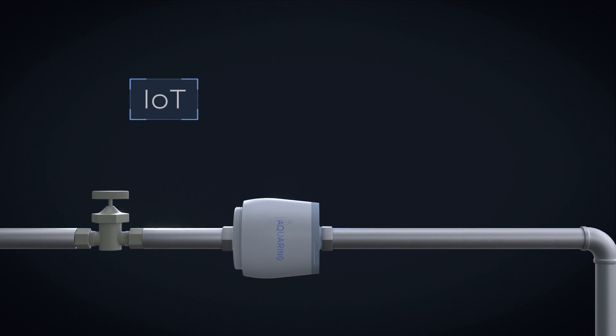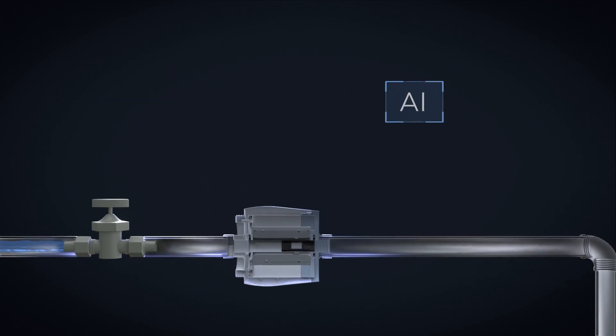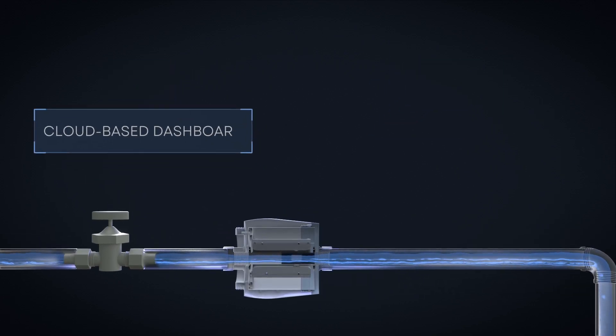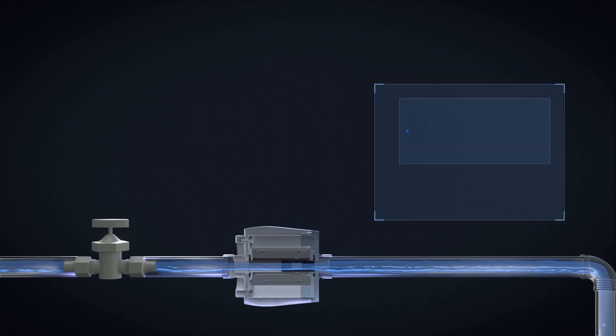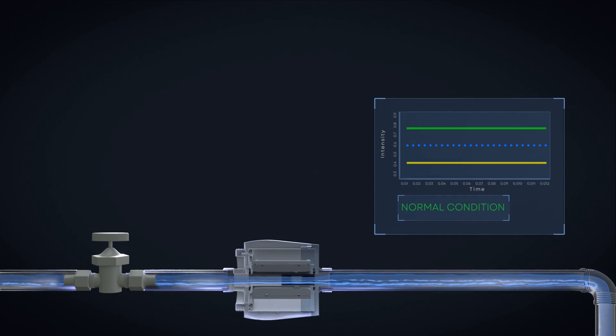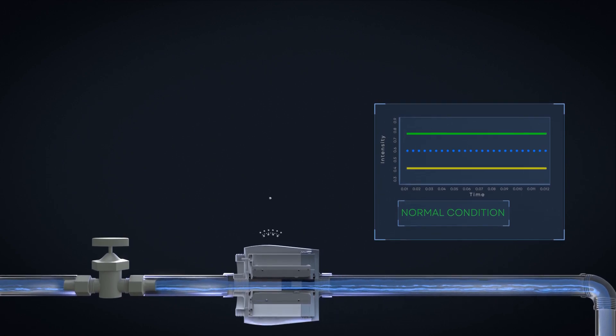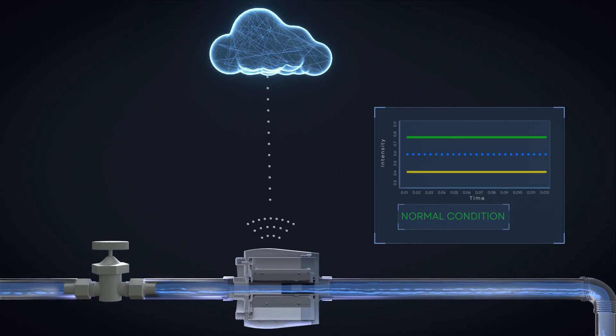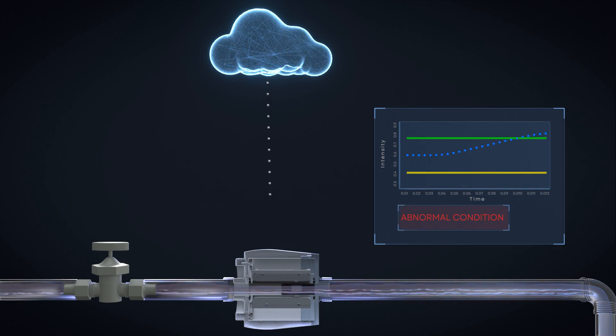This IoT device is powered by AI and is supported by a cloud-based dashboard. The device learns and models the normal flowing condition while constantly taking spectral signatures and broadcasting them to the cloud for immediate analysis. Once an anomaly is detected, an alert notification will be generated.